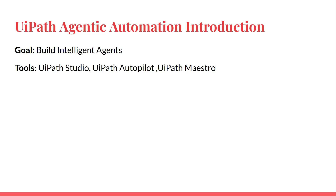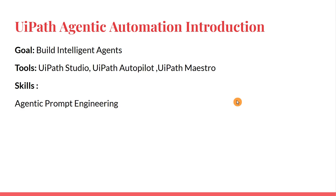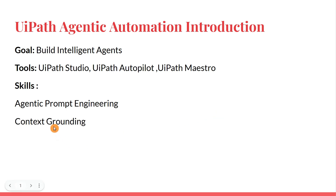What are the tools one has to learn? You have to learn UiPath Studio. You have to know how to use UiPath Autopilot. You have to know how to use UiPath Maestro. And the skills that you need and will develop through the course include agentic prompt engineering — you will understand how to write accurate prompts for AI agents. You will also learn about context grounding: what it is and why it is important for agents.